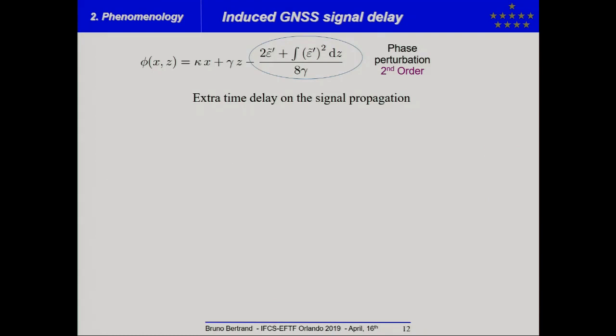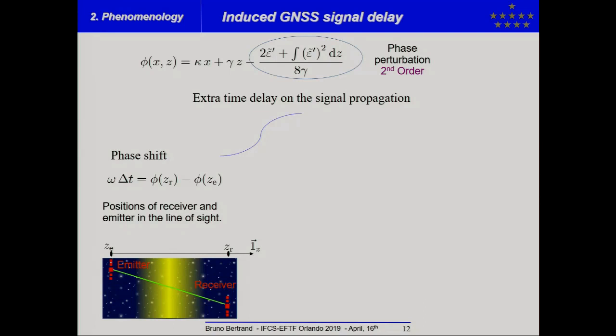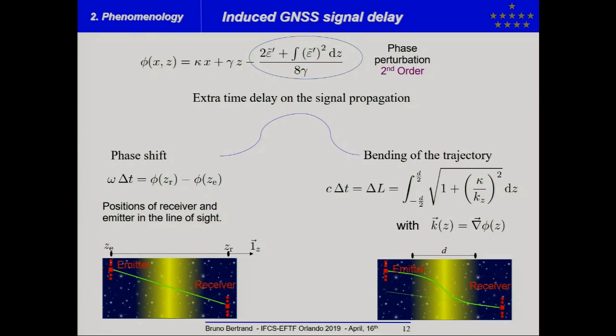And so, looking at this perturbation on the phase, it will provoke an extra time delay on the signal propagation. And the origin of this time delay is twofold. First, you will have a phase shift related to the position of the receiver and the emitter in the line of sight. And then, describing the fact that the wave vector is position dependent, you will have a bending trajectory. And so, it will imply an extra time delay, and you can make some analogy too, with tropospheric or ionospheric effects in propagation of signals.